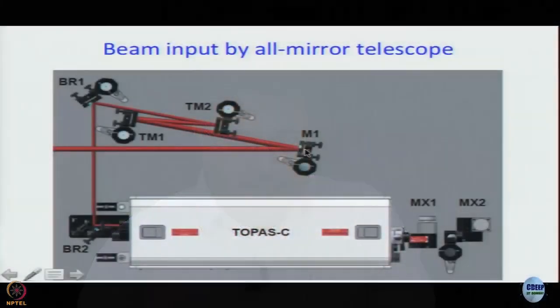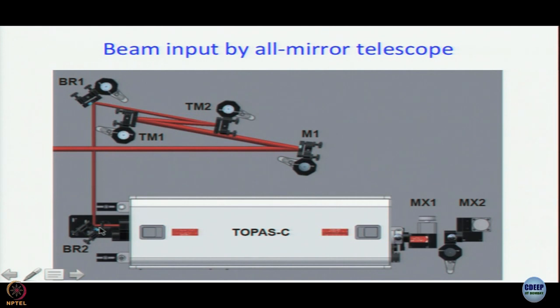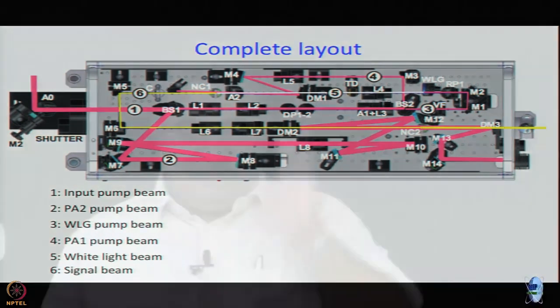Light comes in, hits mirror one then TM1, TM2, BR1 and BR2 and that is what feeds the light into Topaz. This is the layout that you have inside Topaz. What you see is a lot of pieces of optics, and first time you open the lid and look inside you don't know what is what. You don't know which one is a mirror, which one is a beam splitter, which one is a sapphire plate, which one is a nonlinear crystal, which one is a lens. Let us see, we will go slowly and see if you can understand. But to start with let me give you an overview.